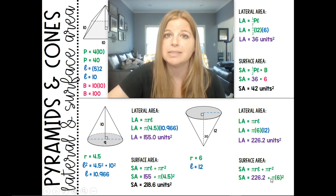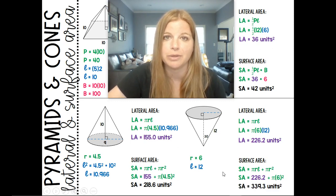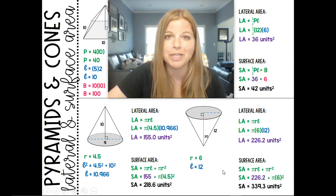I would do 6 squared times Pi plus this amount, and I get 339.38 units squared. Thank you so much for watching. Bye.